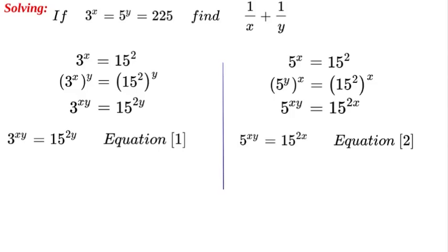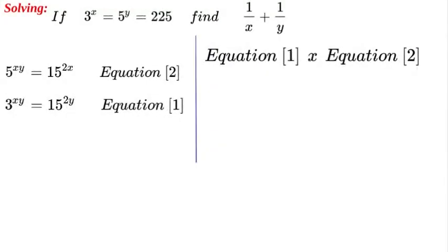At this stage, we have two equations, equation 1 and equation 2, and we're going to multiply them together to get a product of 3 to the power of xy multiplied by 5 to the power of xy.